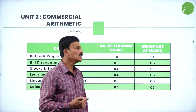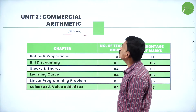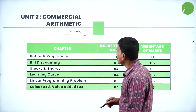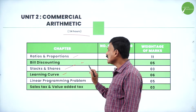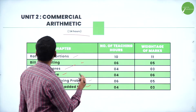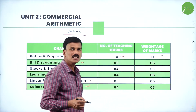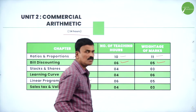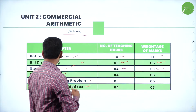Now let us come to Unit 2, Commercial Arithmetic. It takes 34 hours to complete Unit 2 and we are going to study around 6 chapters: Ratios and Proportions, Bill Discounting, Stocks and Shares, Learning Curve, Linear Programming Problems, and Sales Tax and Value Added Tax. For Ratios and Proportions, 10 teaching hours and 11 marks. For Bill Discounting, 6 hours and 5 marks. For Stocks and Shares, 4 hours and 3 marks.